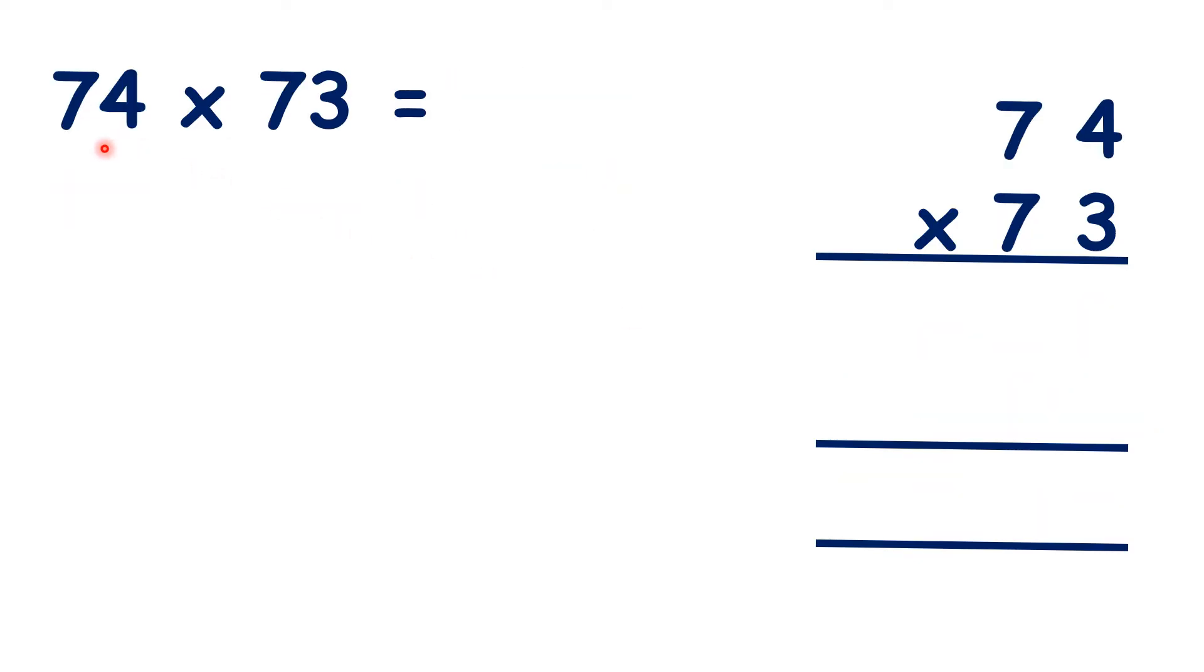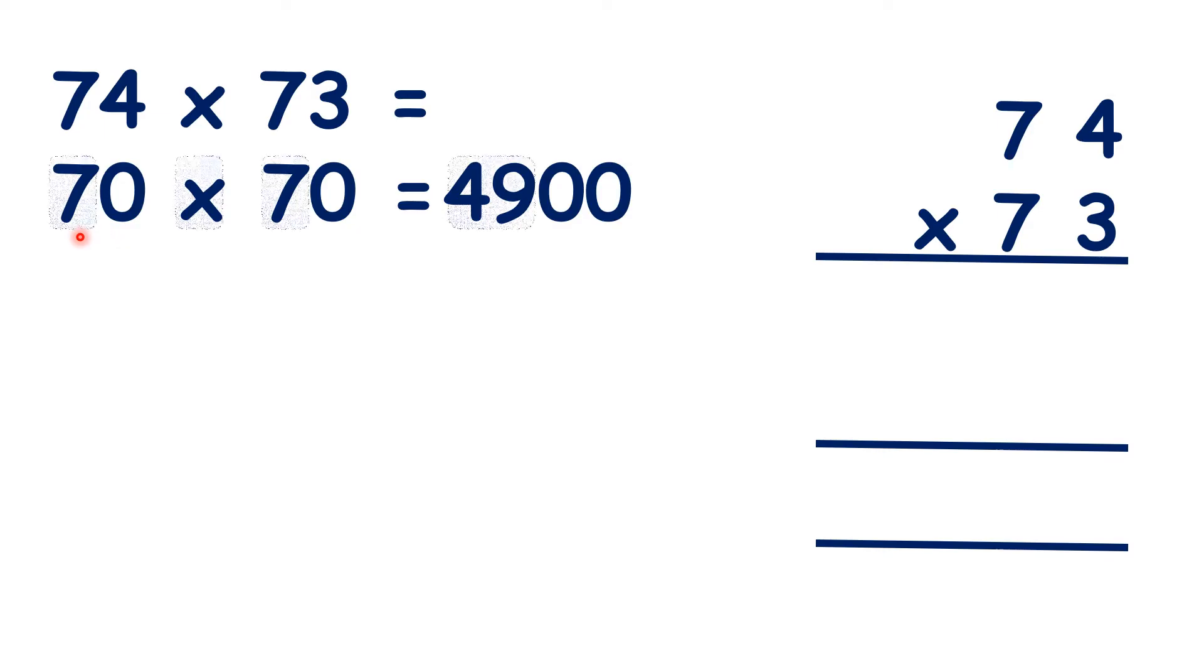Now, we need to work out 74 times 73. Both of these numbers round to 70, and 70 times 70 is 4,900, because 7 times 7 is 49, and if there are two end zeros in the question, there will be two end zeros in the answer.